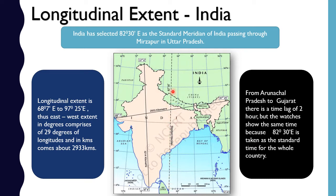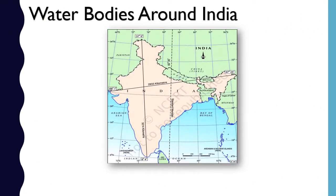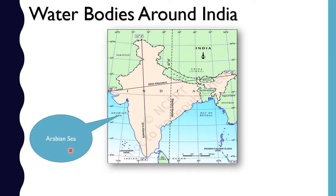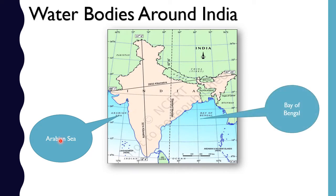The latitudinal extent starts from 8 degrees 4 minutes — that is the mainland of the country at Kanyakumari, since Indira Point is at 6.45 degrees but we consider only the mainland — up to 37 degrees 6 minutes north at Kashmir. This covers almost 29 degrees of latitudinal extent, and converting to kilometers, the length is 3,214 kilometers. That is why the duration of day and night varies from Kanyakumari to Kashmir.